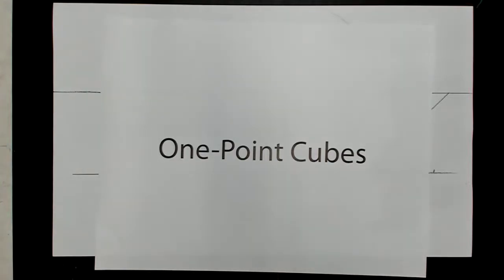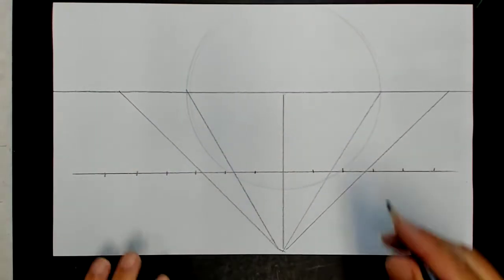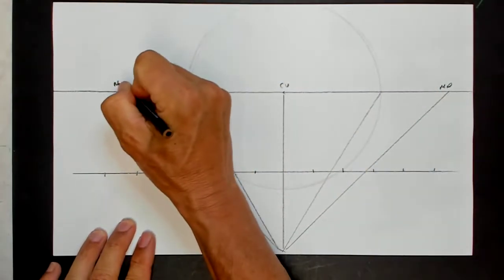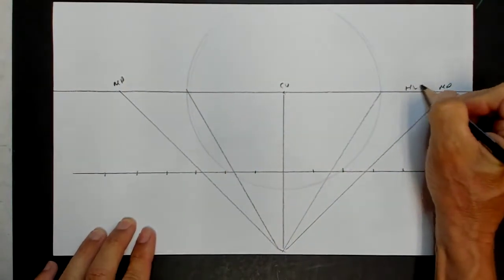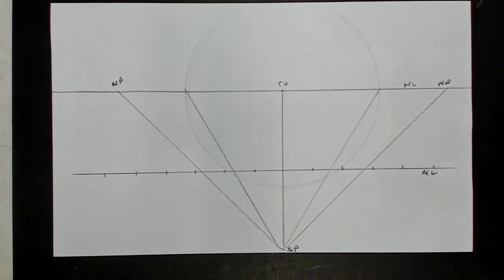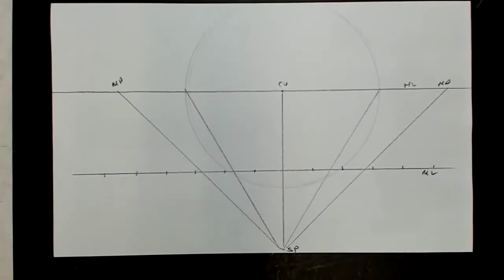Last time we drew some one-point perspective squares. Now let's draw some cubes and give these objects a third dimension. Here's a diagram with center of vision, measuring point, measuring point, horizon line, measuring line, and station point — all stuff that should be familiar by now. So let's draw — first, let's draw a square again.